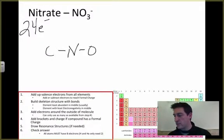So I've got my nitrogen, and I know I've got three oxygens, so I'm going to bond those on here. I start adding my electrons around the outside edge.